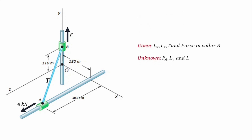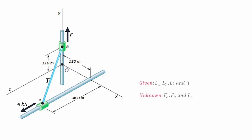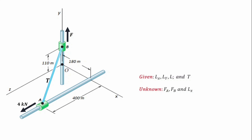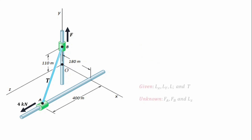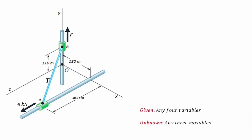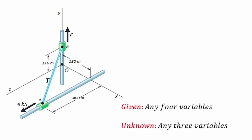The equation may take another form, such that we're given values of LX, LY, LZ, value of T, and force in collar B, and required to find the force in collar A alongside LY and the length of the string. Also, we could be given LX, LY, the length of the string, and the tension T, and be required to find FA, FB, and LZ. You may want to try some of these variations, knowing all the values we've calculated. Any four variables can be given and we may be required to calculate any three unknown variables. This will be all for now — thank you for watching.